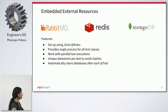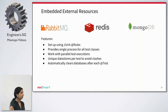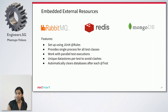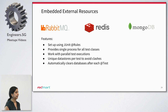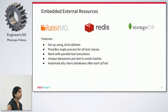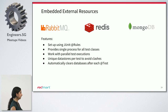We use a ton of external resources, and when we are writing our tests, we also want to be able to test those. But in a lot of scenarios, we don't want to actually connect to the staging environment. So what we do instead is use embedded resources. There are a number of third-party embedded resources available for RabbitMQ, Redis, and MongoDB. But it's pretty cumbersome to set up because you need to have a setup and teardown for each class in which you want to use those resources. With the microservice test library, we've abstracted away all of that and you can just use JUnit rules to include the embedded resources you want. We've also made sure to have unique data stores and we automatically do the cleanup after each test.